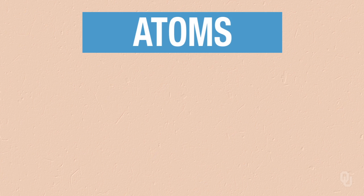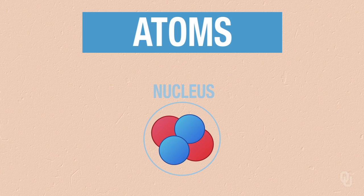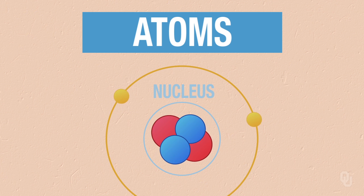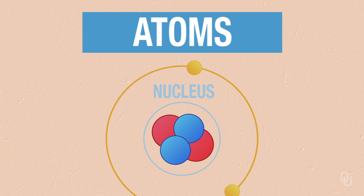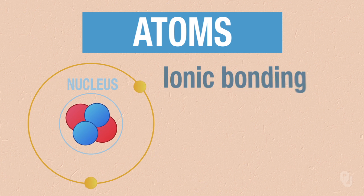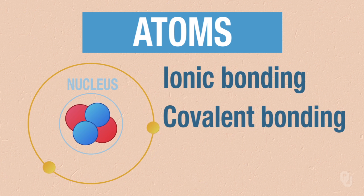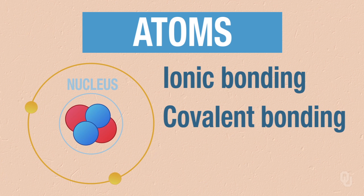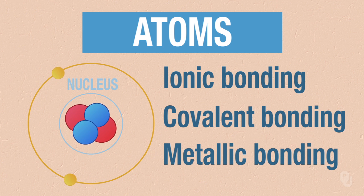To understand the internal structure of minerals, we will need to discuss the structure of atoms and the ways they bond together in minerals. Atoms have a proton and a neutron in the nucleus and electrons which surround the nucleus. We will talk about ionic bonding, covalent bonding, and we will also talk about other types of bonding like metallic bonding.